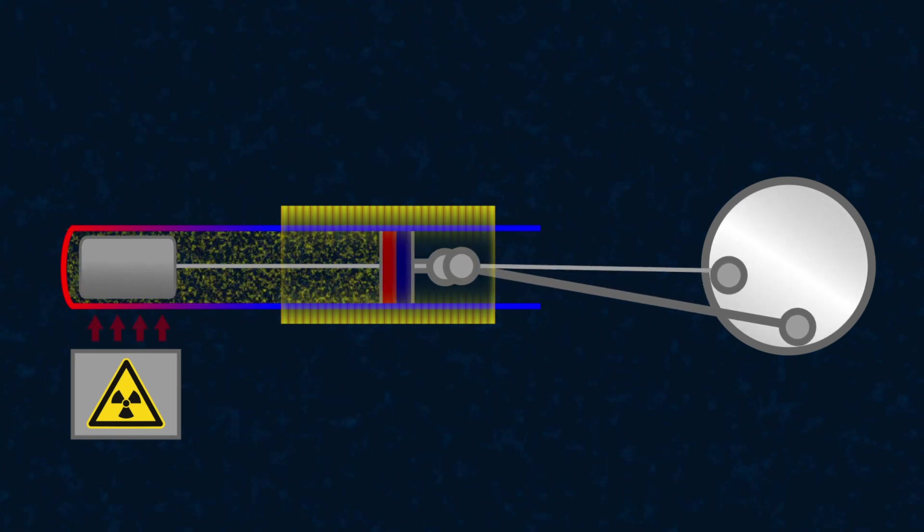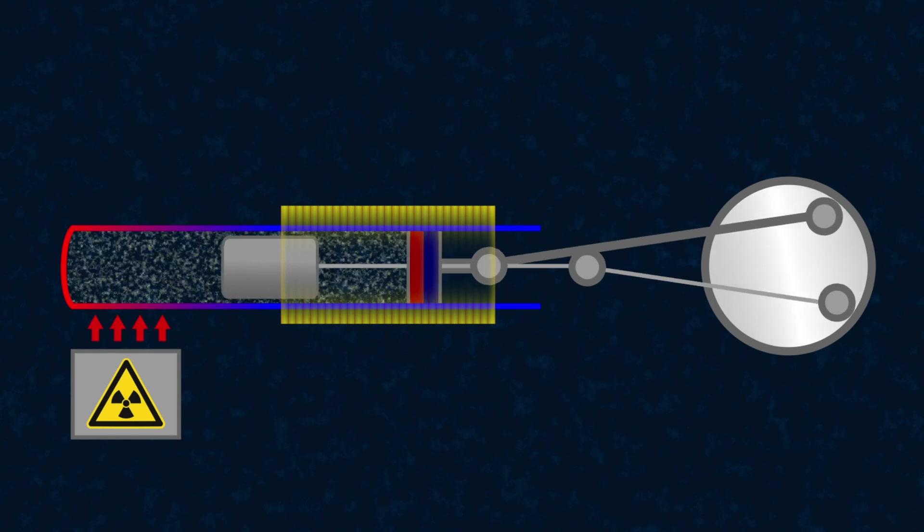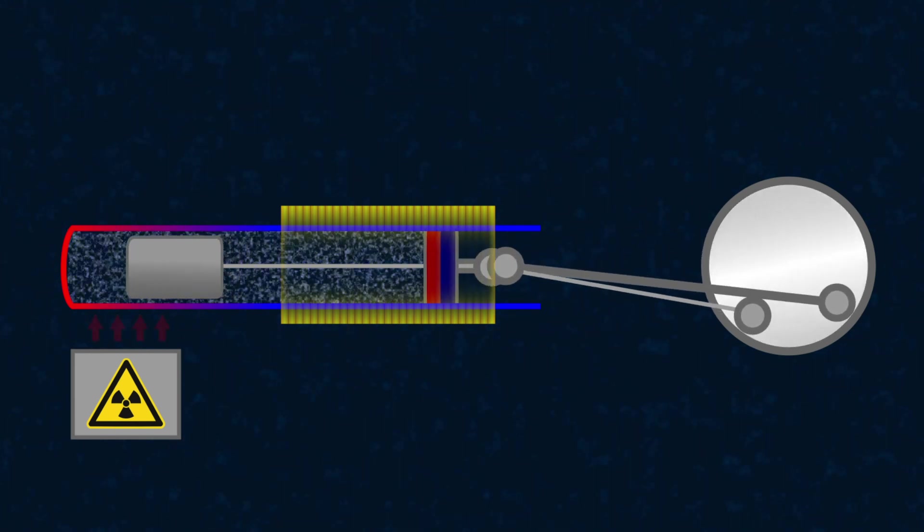And most importantly, unlike traditional RTGs, radioisotope sterling generators still have moving parts, which reduces their reliability and service life.